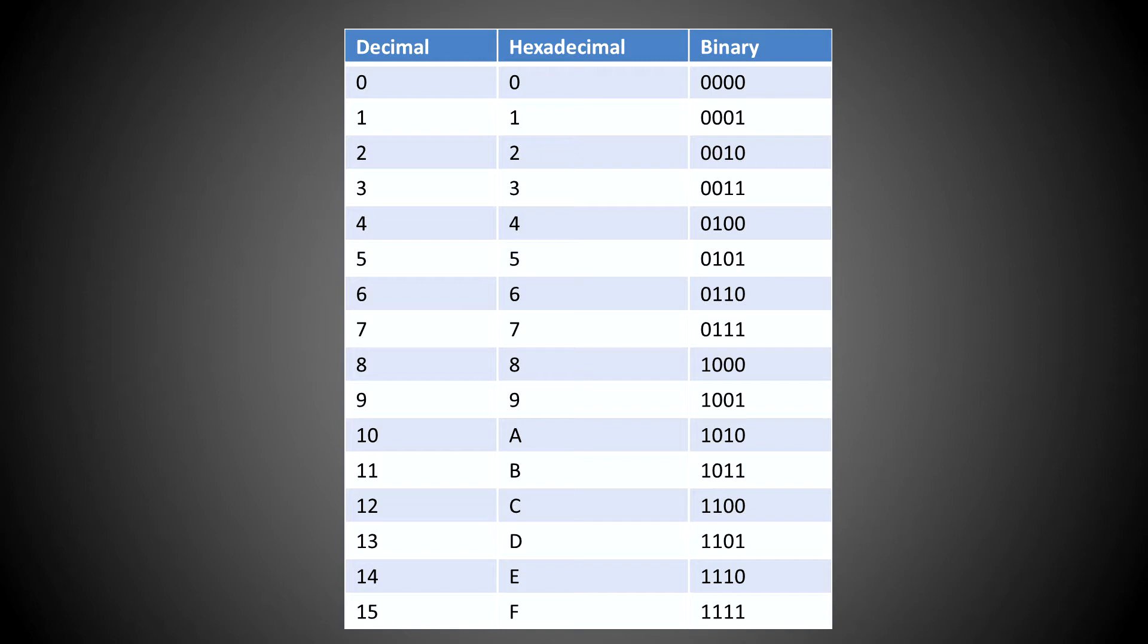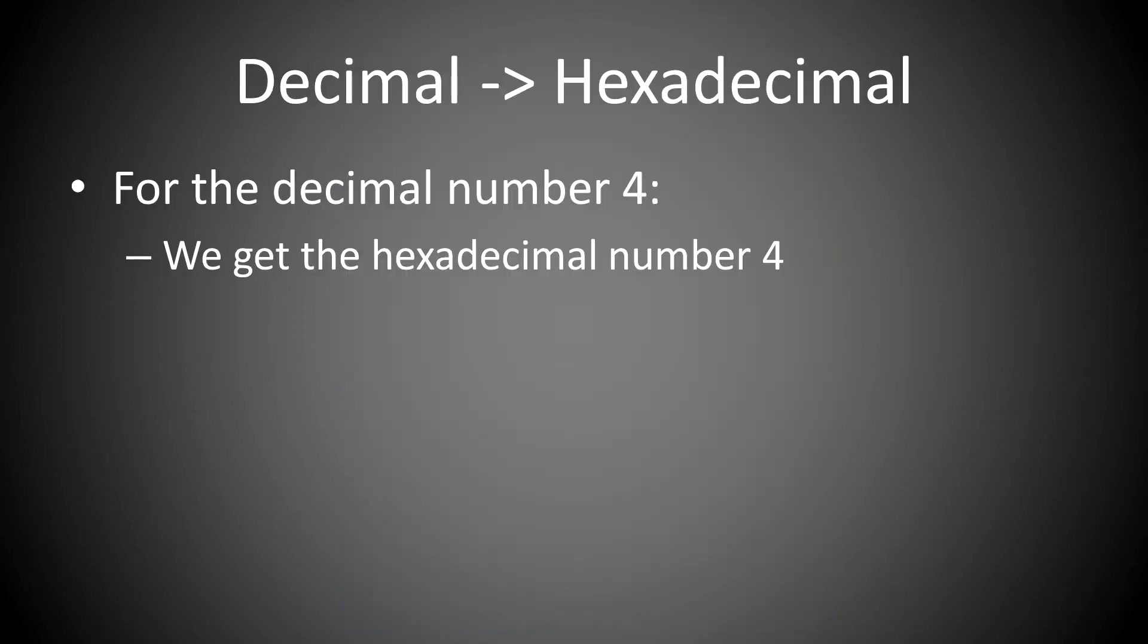All of the hexadecimal and decimal numbers are the same until you get to the decimal digits above 9. At that point, the two-digit numbers are represented by letters starting with 10 as A, 11 as B, and so on until you get to 15, which is F. So converting from decimal to hexadecimal for the decimal number of 4, you look on the chart, we get the hexadecimal number of 4.